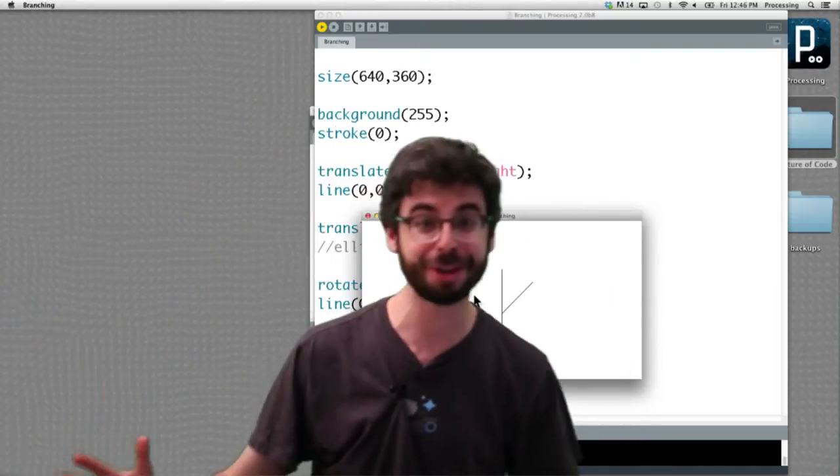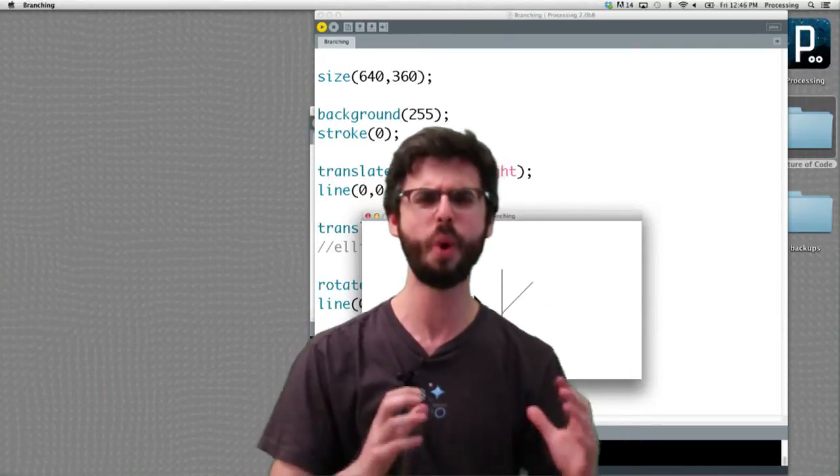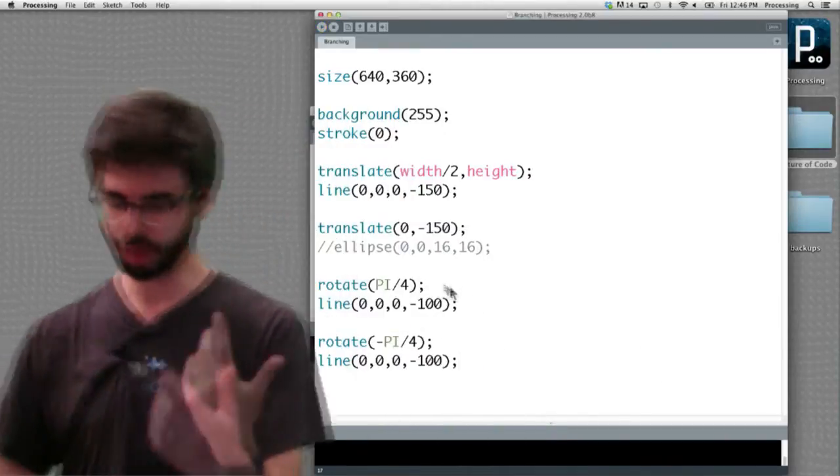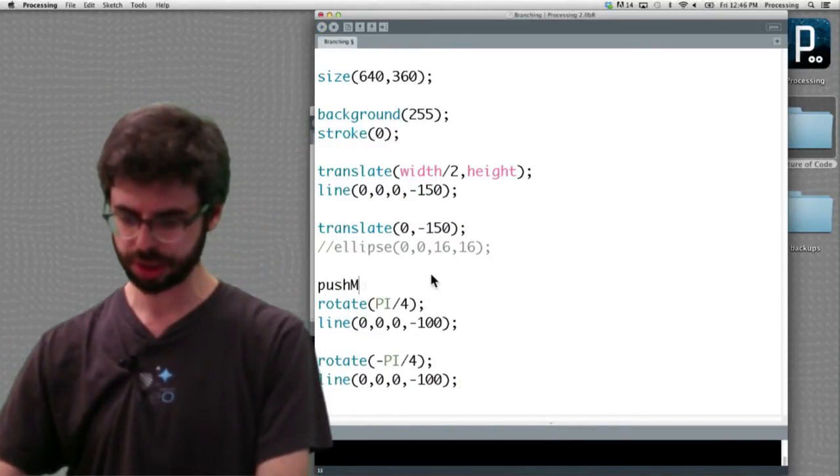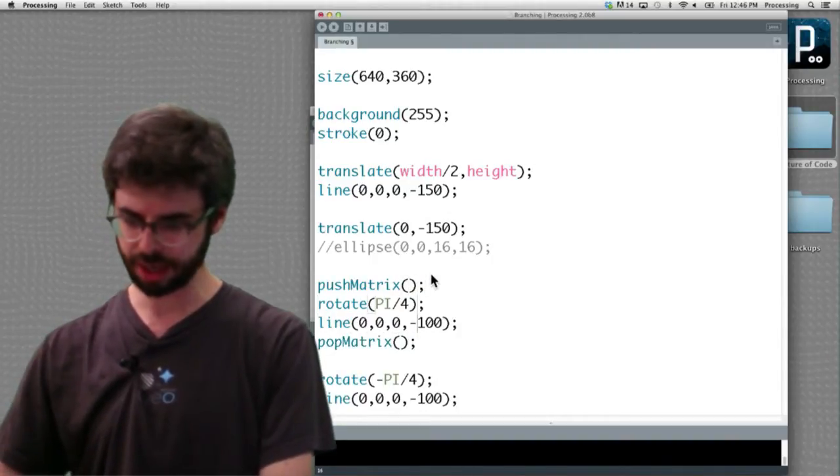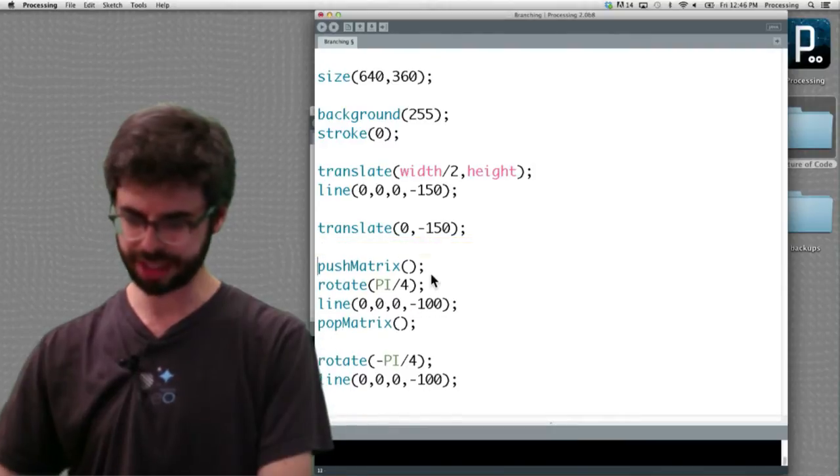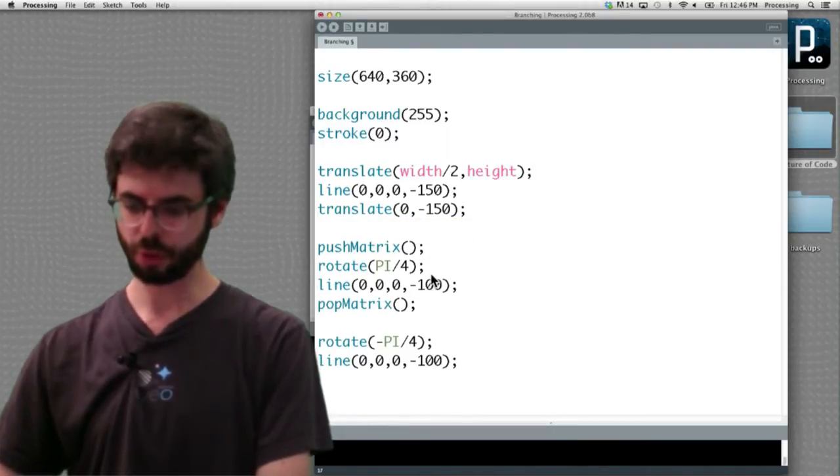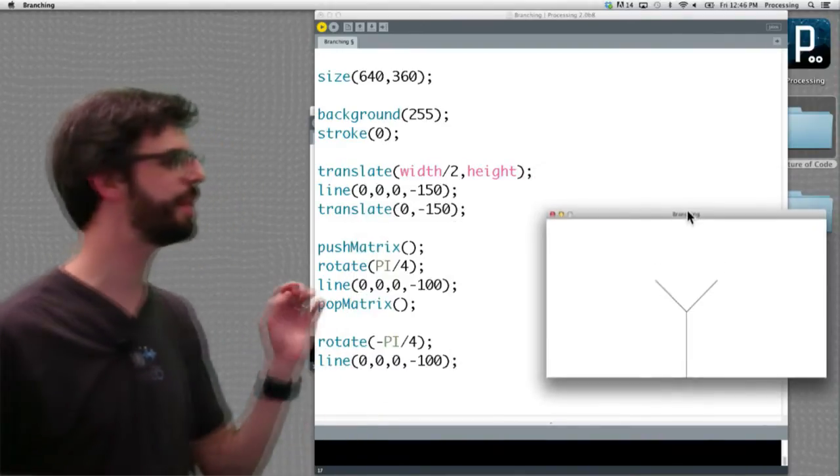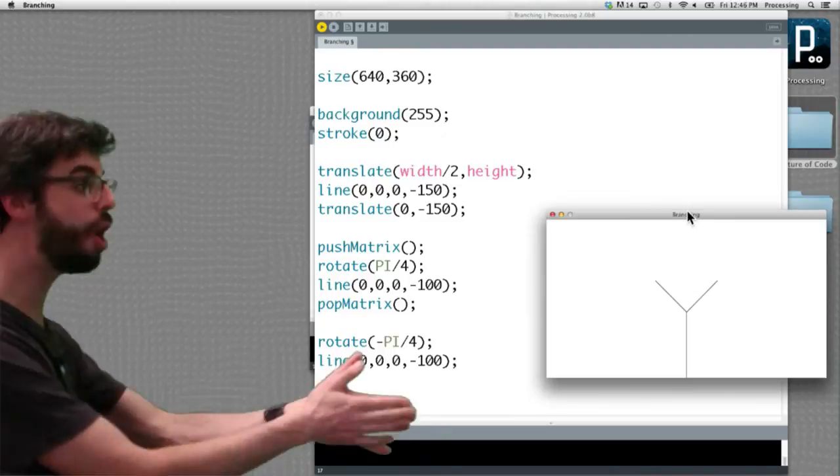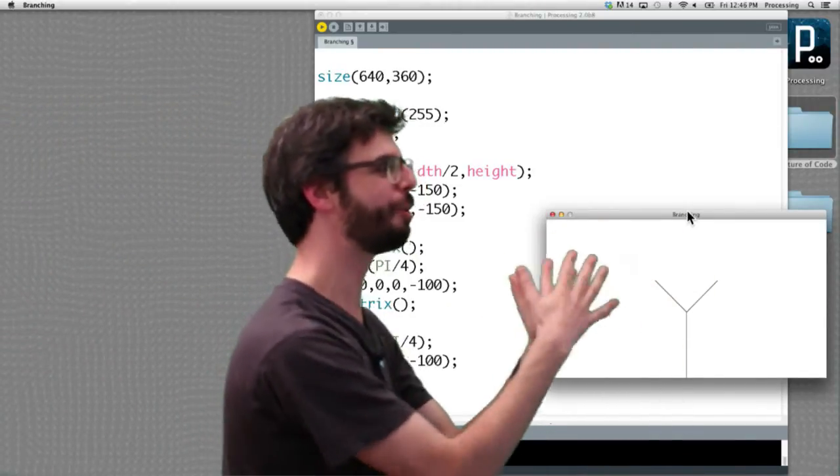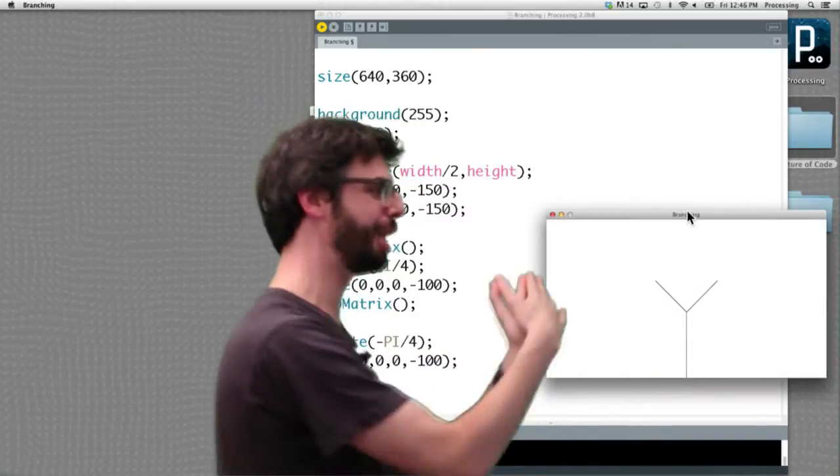Push matrix saves the current transformation state. Where have I translated and rotated to? Then pop matrix restores it. So what if I said push matrix here, pop matrix here, let's simplify some things, and then rotate the other direction. And look at this. We've got the beginnings of this now. We're able to draw a line from the bottom to the middle, rotate, draw a line, save, rotate, draw a line, pop back, rotate, draw a line.